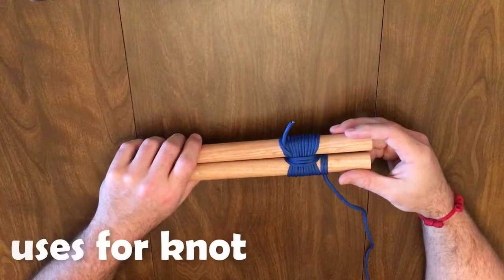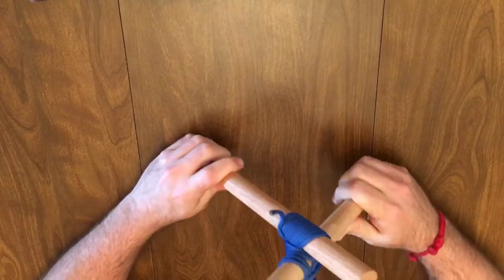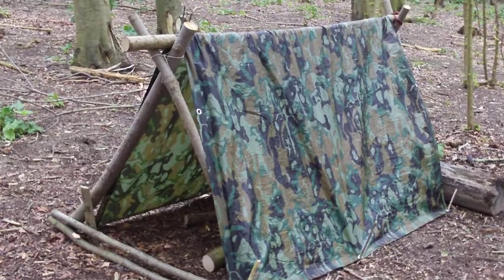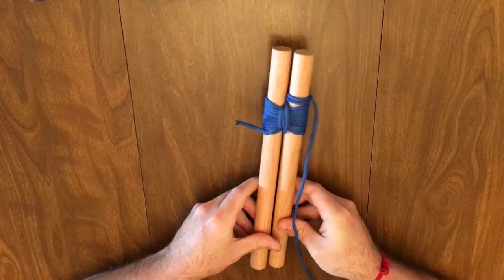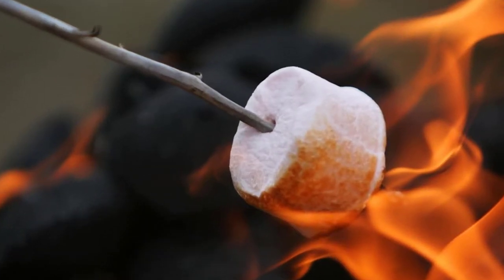You guessed it, the Shear Lashing is used to bind the ends of two poles or stakes. You can also splay the legs to create an A-frame for a shelter or other structure, or you can use it on a smaller scale to hold up your cooking stick when roasting a hotdog or marshmallows.